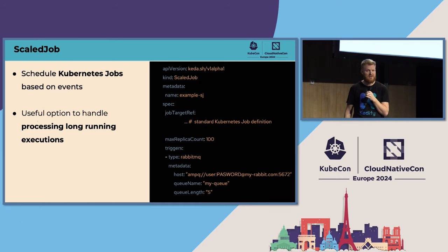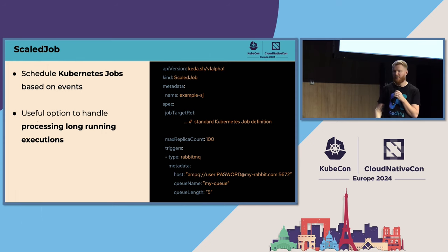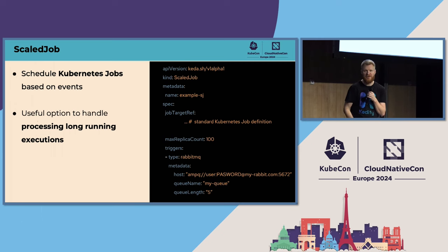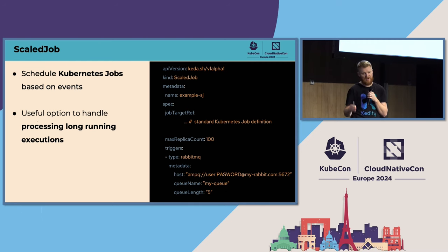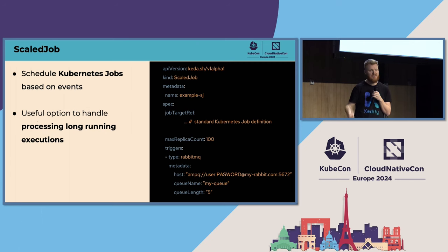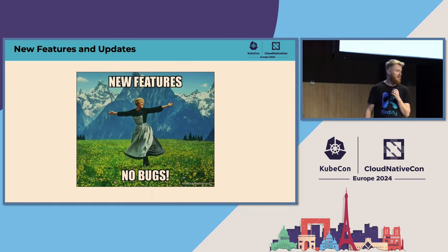The second resource is ScaledJob, similar to ScaledObject but instead of referencing a workload, you put a Kubernetes job specification directly in it, along with a configuration section and trigger section. This is especially useful for long-running executions — imagine computations like LLM model inference that might take hours or days. With HPA or ScaledObject, the autoscaler might remove the replica mid-execution, but with ScaledJob the job runs and finishes when it needs to.